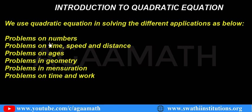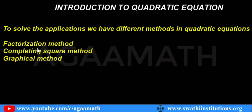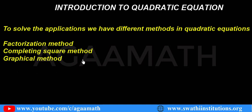To solve problems based on all these, we have different methods. To solve the applications, we have different methods in quadratic equations. One of them is the factorization method, completing the square method, and the graphical method. This is all how we do the factorization method, completing square method, and graphical method — this is all we are going to study in this chapter.